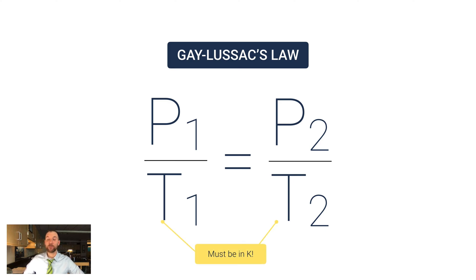Temperature has to be in Kelvin, it can't be in Celsius, and the reason for that again is because Celsius scales can go negative, and if you were to use a negative temperature in here you may end up calculating a negative pressure, which cannot happen. So we have to use a temperature scale that is an absolute scale, meaning it's only positive or zero.